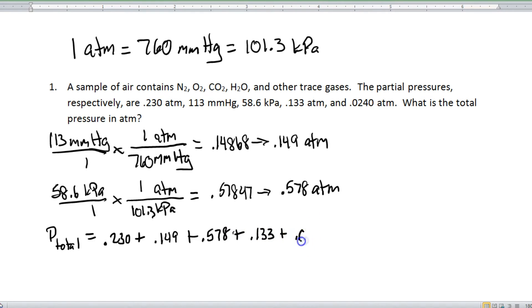So you just grab your calculator, you add them all up, and we find that the total pressure is equal to 1.114 atmospheres. And it really is that simple. Alright?